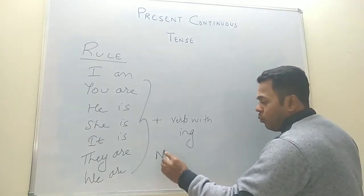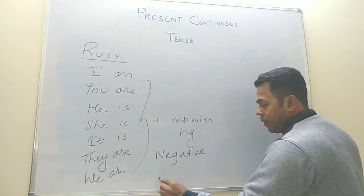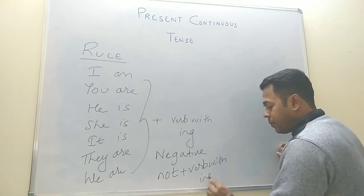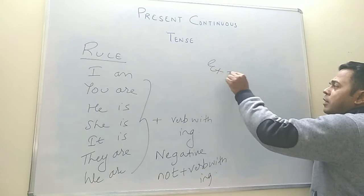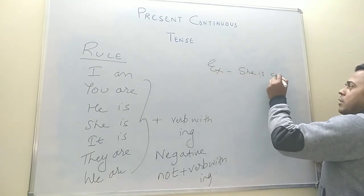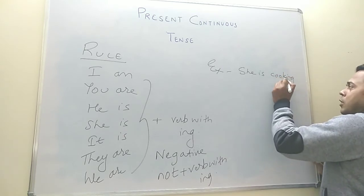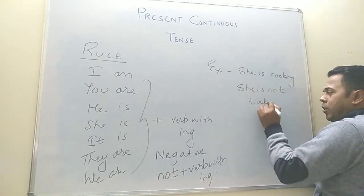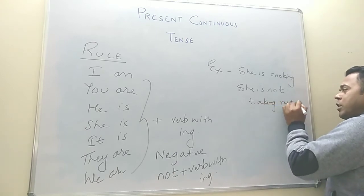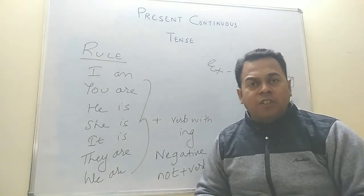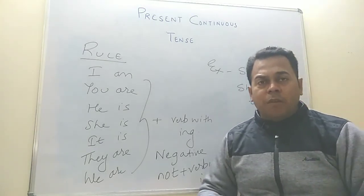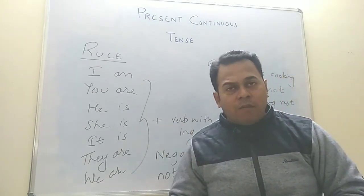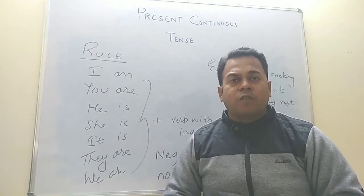For negative examples, you have to use 'not' with the verb with -ing. For example: 'she is taking rest' becomes 'she is not taking rest'; 'they are playing match' becomes 'they are not playing match'; 'he is working fast' becomes 'he is not working fast.' This is how you prepare negative structures of present continuous tense.